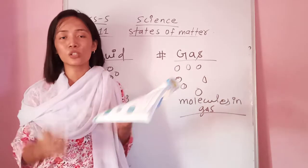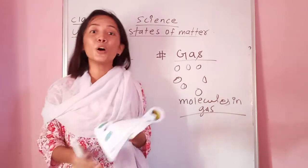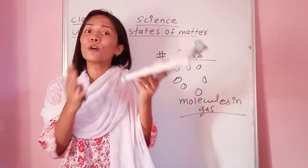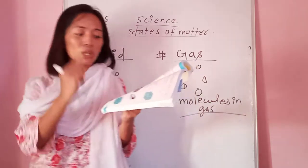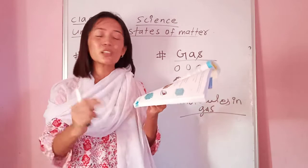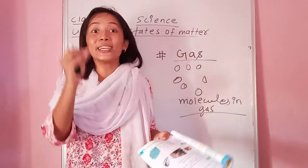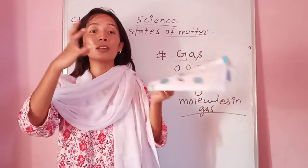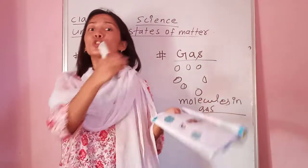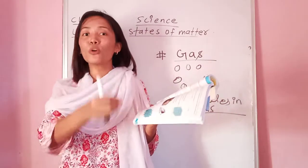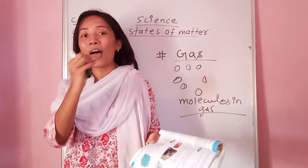So, liquid. The first point about the liquid state: liquid has a fixed volume but not a fixed shape. It has a fixed volume but it does not have a fixed shape. That is why in the second point, it is written that liquid takes the shape of the vessel in which it is poured, but it does not have its own shape.